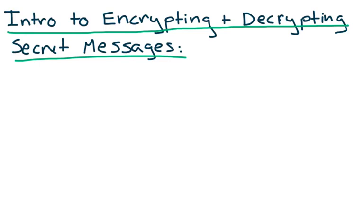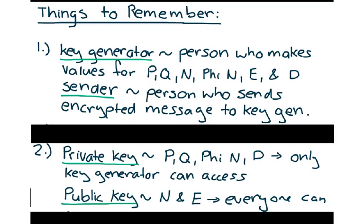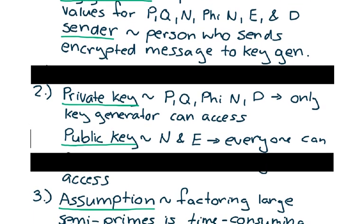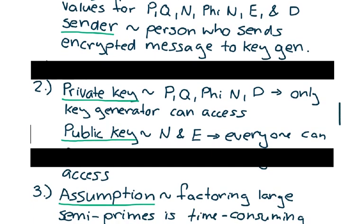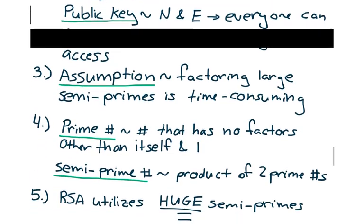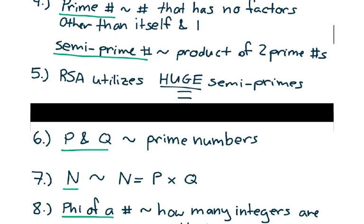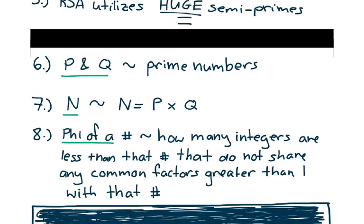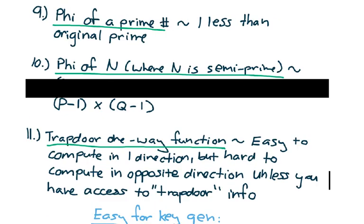This is part four of a series on the RSA encryption algorithm: Intro to Encrypting and Decrypting Secret Messages. Once again, we're going to start off with our list of things to remember. I've attached the previous lists of things to remember right here, if you'd like to take a look at it again.